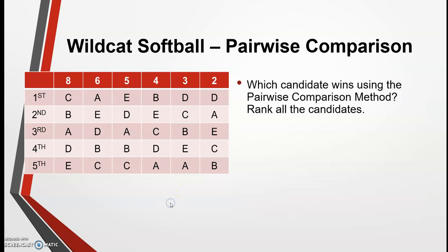Now let's look at which candidate would win using the pairwise comparison method, and then rank all of the candidates — an extended ranking. Let's start with our comparison of A versus B. We go through each column and look to see which one is ranked higher, A or B. If A is ranked higher, we award those votes to A; if B is ranked higher, we award those votes to B.